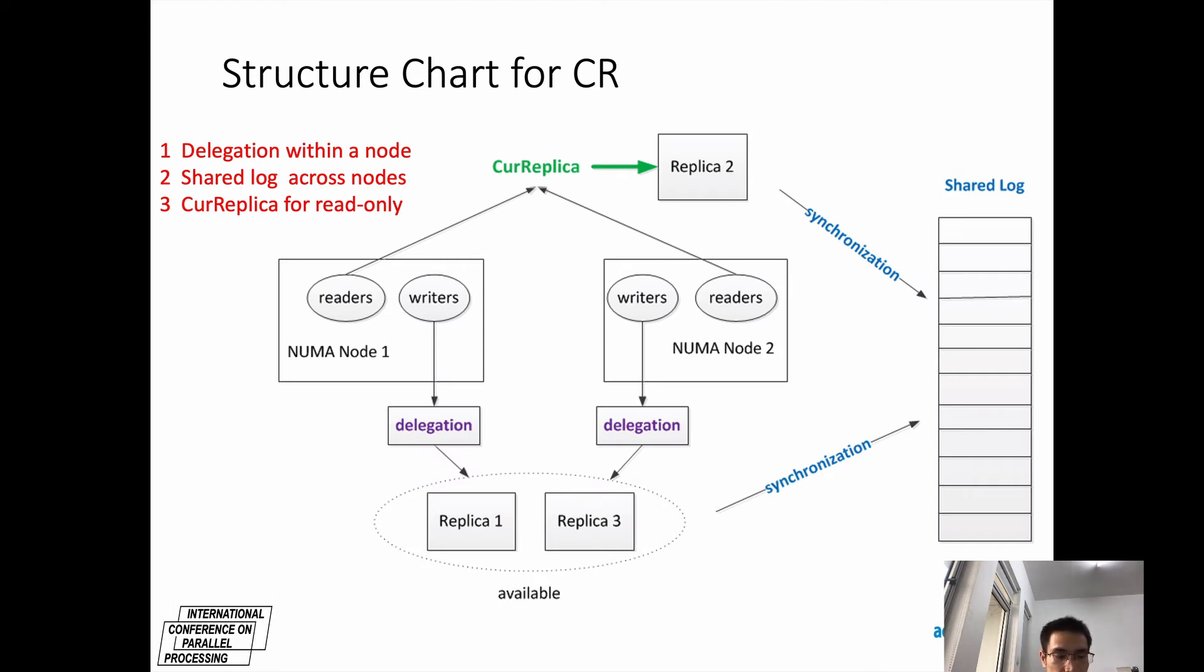This is the structure chart of our method CR. Writers within a NUMA node use delegation to access the replica. For delegation, the writers are divided into server and clients. The server executes the requests on behalf of clients. Writers from different NUMA nodes keep synchronization by using a shared log. The replicas keep consistent with the shared log.